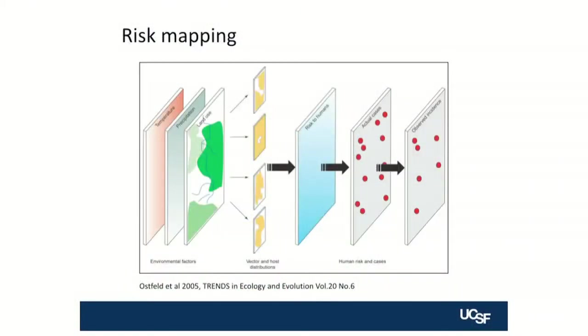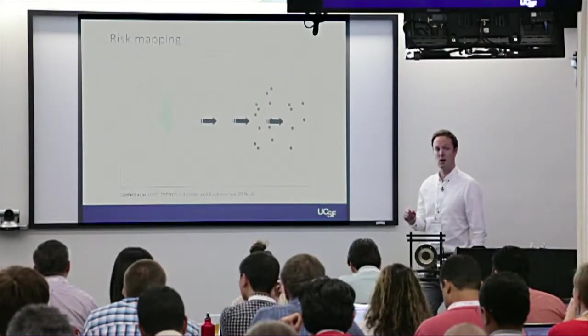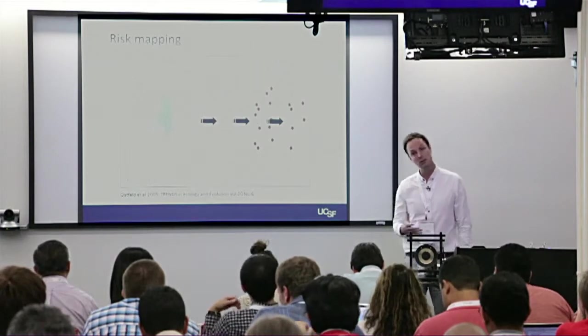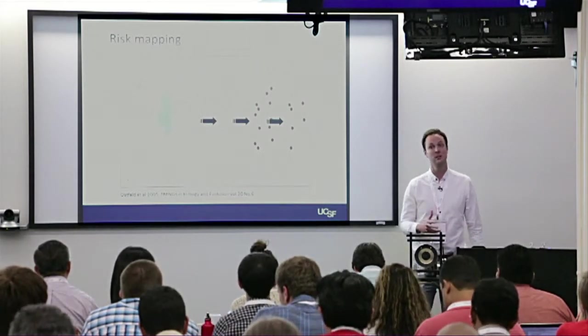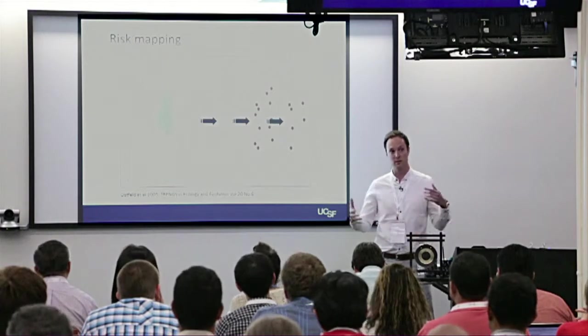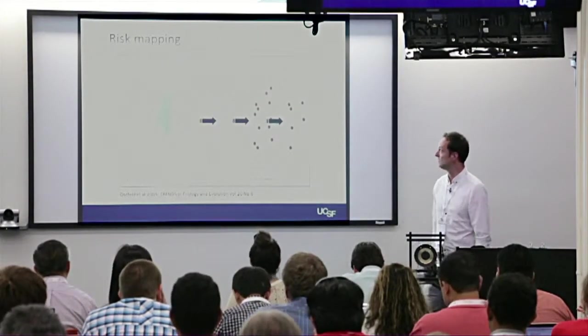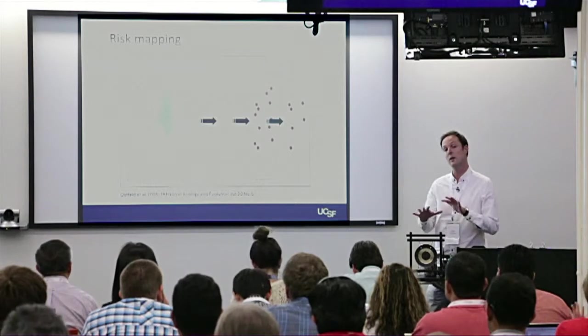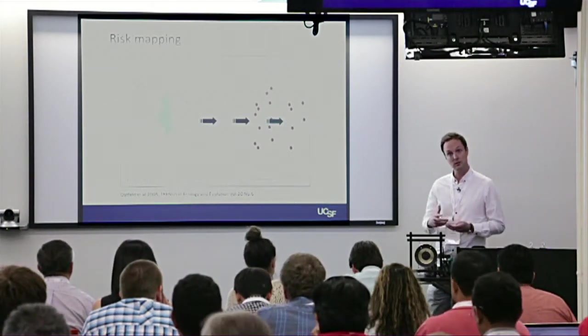What do I mean by risk maps? Diseases aren't everywhere. They are only in places where humans, the pathogen, and the vector — the thing that spreads the disease, mosquitoes in the case of malaria — where these three things overlap. Their distributions are dependent on a set of environmental and climate variables. Things like temperature, precipitation, and land use all control the distribution of these three things. And where they overlap, we get disease risk.